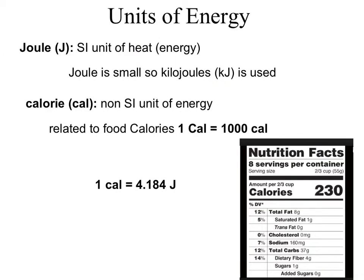The unit of energy we'll mostly use in this class is the joule, represented by a capital J — it's the SI unit of heat. A lot of times the kilojoule is used instead, because the joule can be fairly small for certain calculations, so we convert to a more easily usable number. You already know how to convert between kilojoules and joules from dimensional analysis with kilograms and grams.